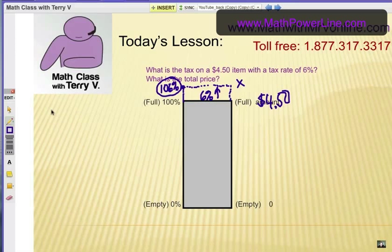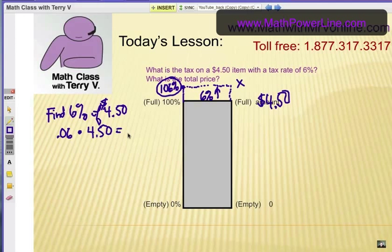Now, as an equation, what you can do is find 6% of $4.50. So, it's .06 times $4.50. And, that will give you your tax amount. Then, you're going to add that tax amount, of course, onto $4.50. So, that's going to take two steps. Find the tax amount and then add it on to the full price.